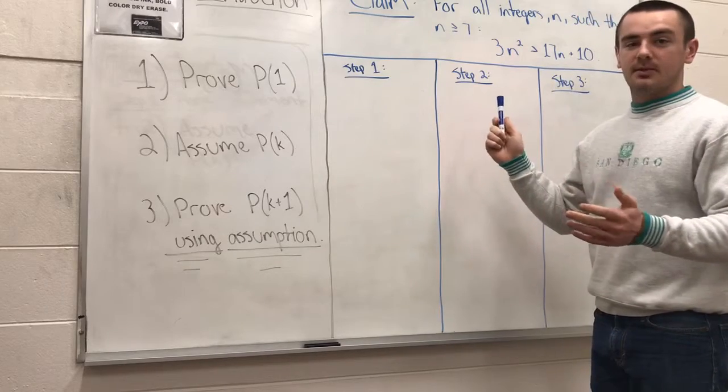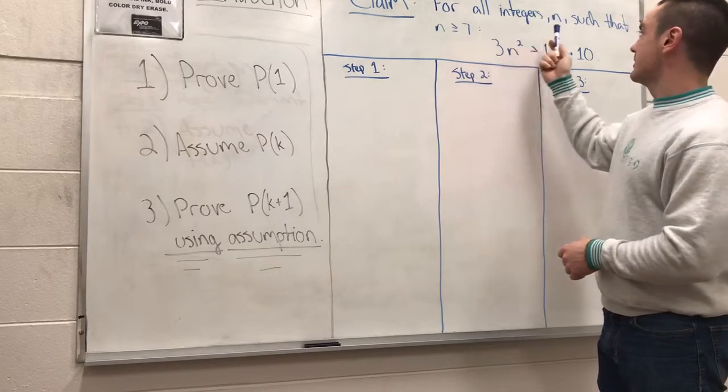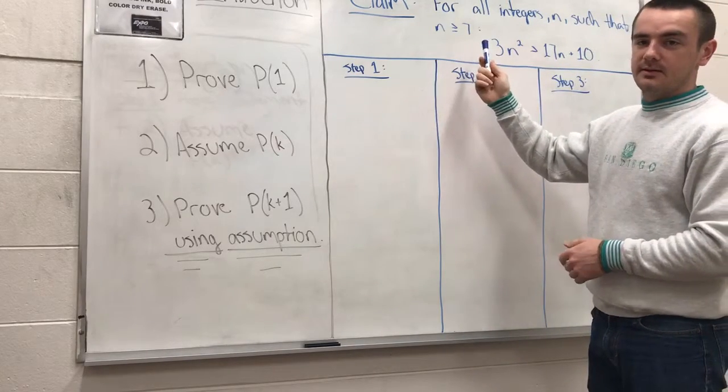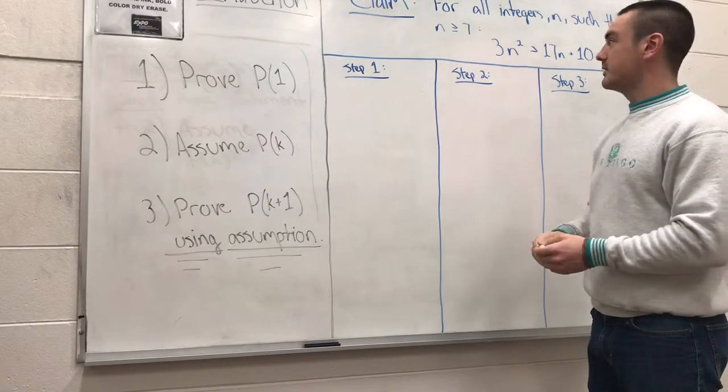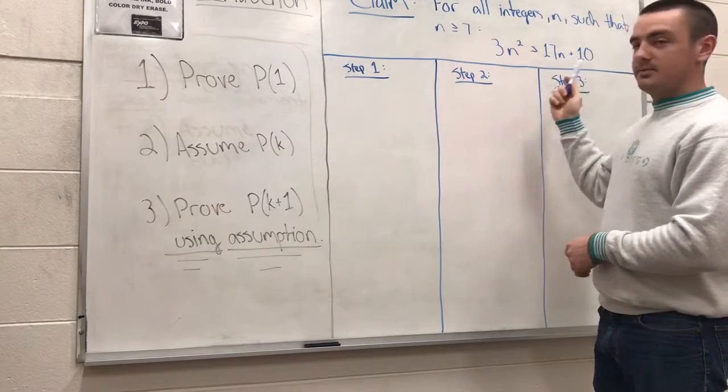We have this claim, and we want to prove this to be true. For all integers n such that n is greater than or equal to 7, as a subset of the natural numbers, we have that 3n squared is greater than 17n plus 10.